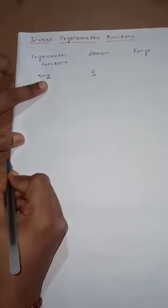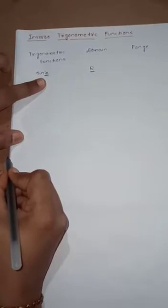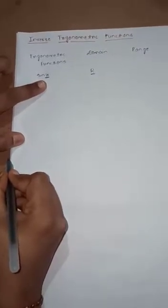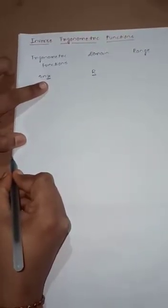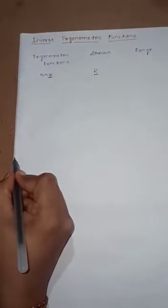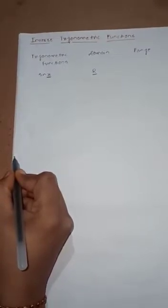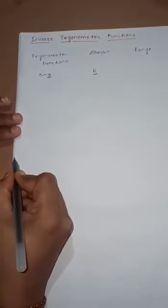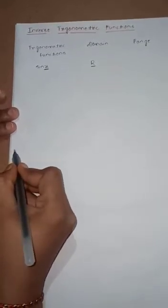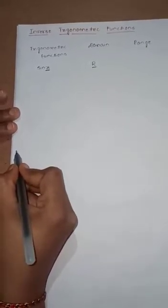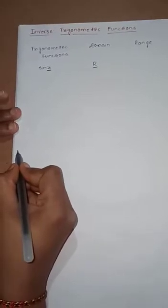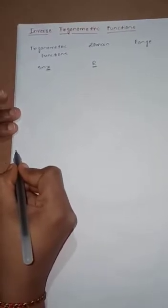If x = 45°, that is π/4, sin(π/4) = 1/√2. If x = 90°, sin 90° = 1. If x = 180°, sin 180° = 0. If x = 270°, sin 270° = −1. And if x = 360°, sin 360° = 0.